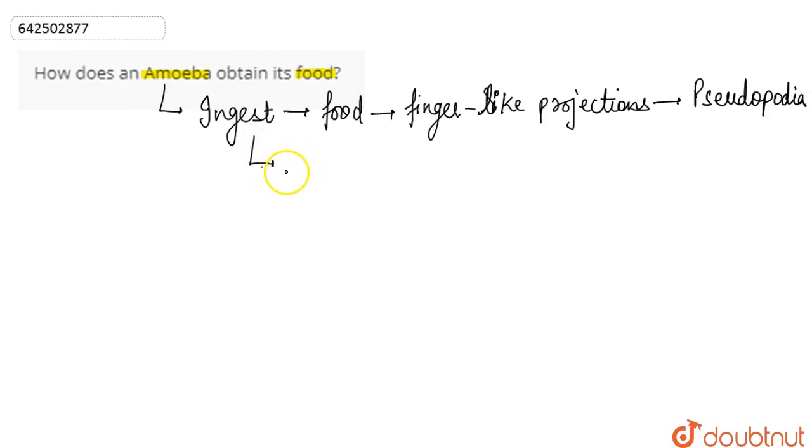then it ingests the food particle along with a drop of water. Once the food is ingested with the help of pseudopodia inside the body of the amoeba,